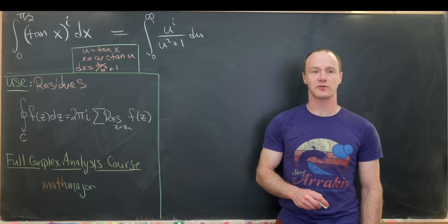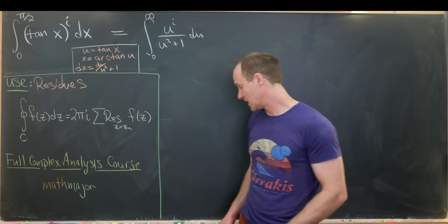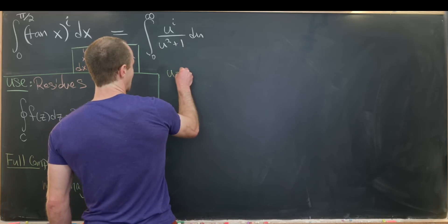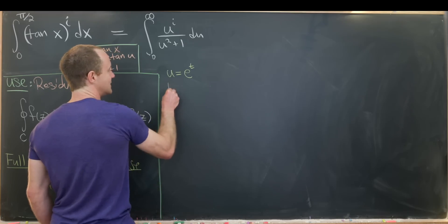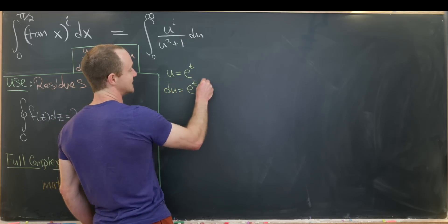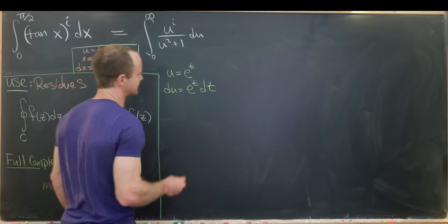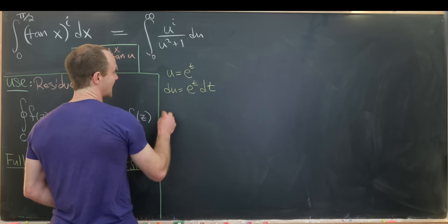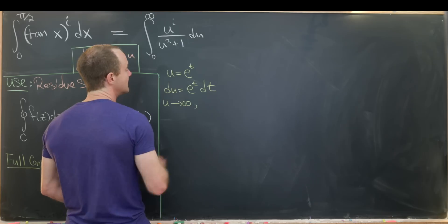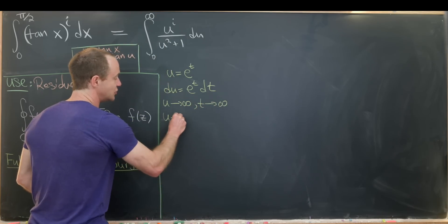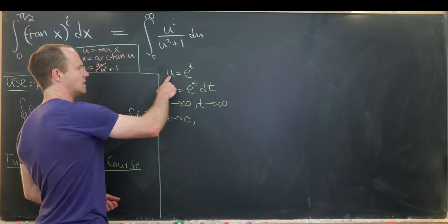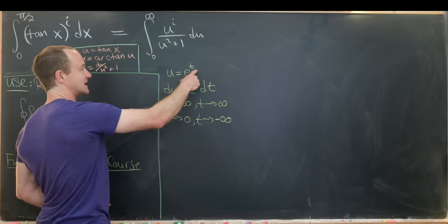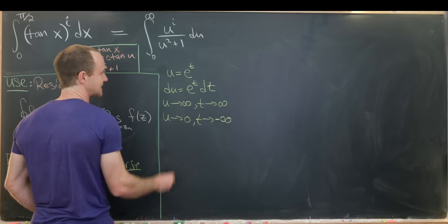Now let's make another substitution: u = e^t. That means du = e^t dt, and u² + 1 becomes e^(2t) + 1. For the bounds: as u → ∞, t → ∞, and as u → 0, t → −∞, since e^t → 0 as t → −∞.